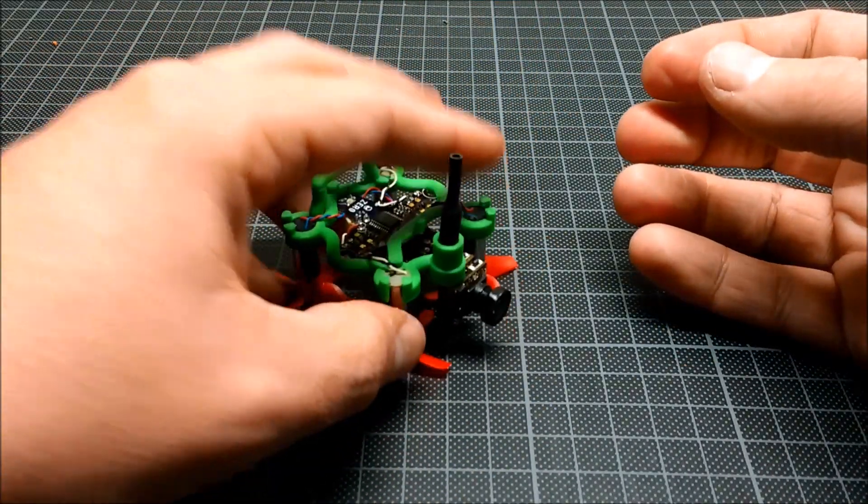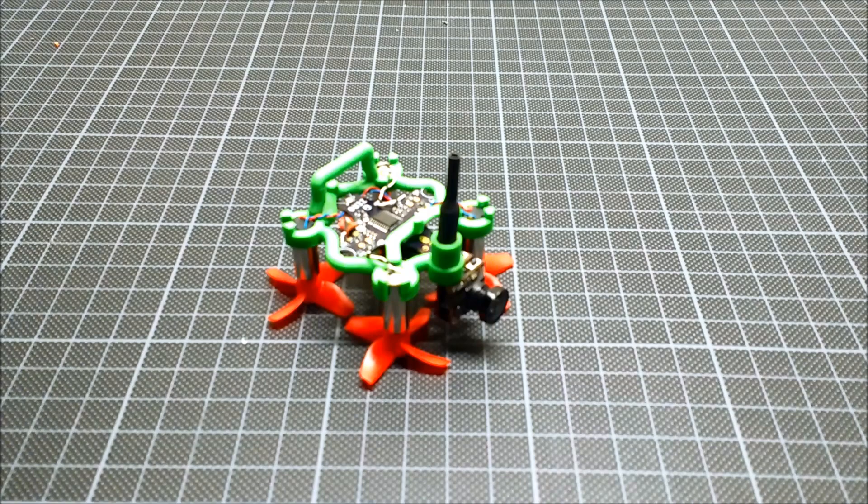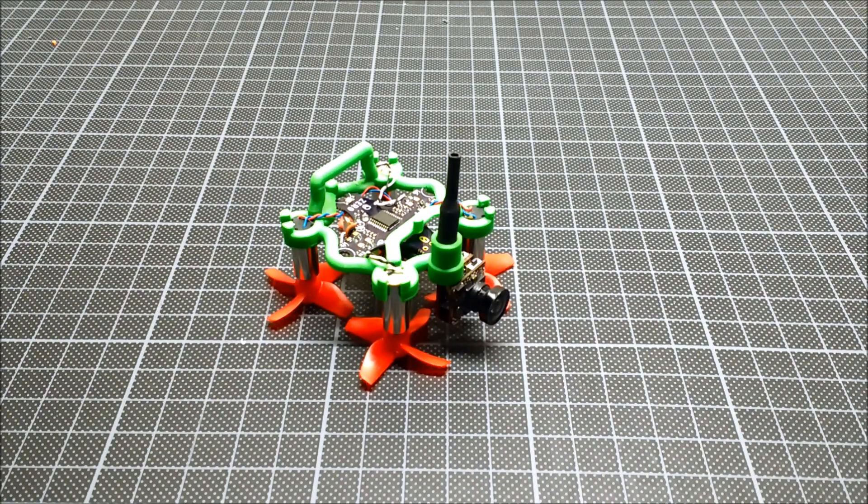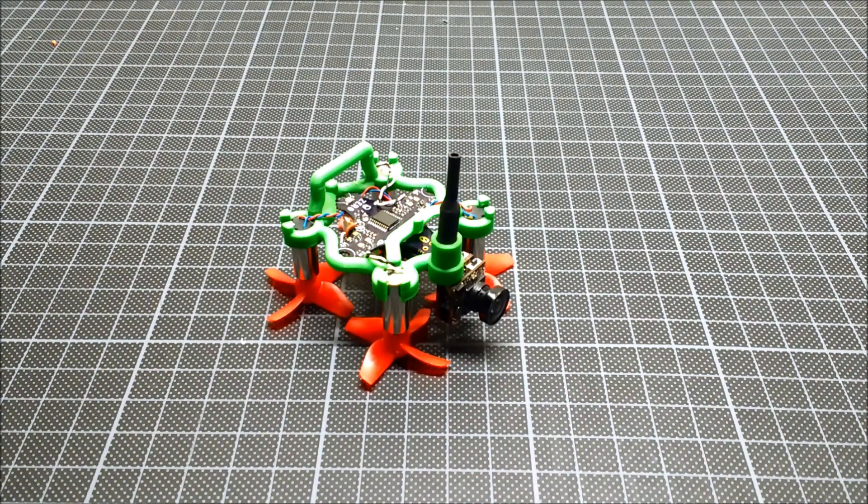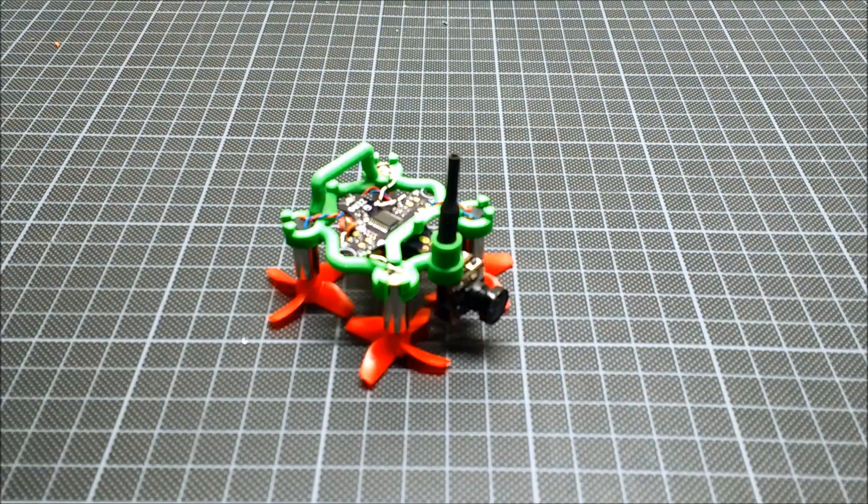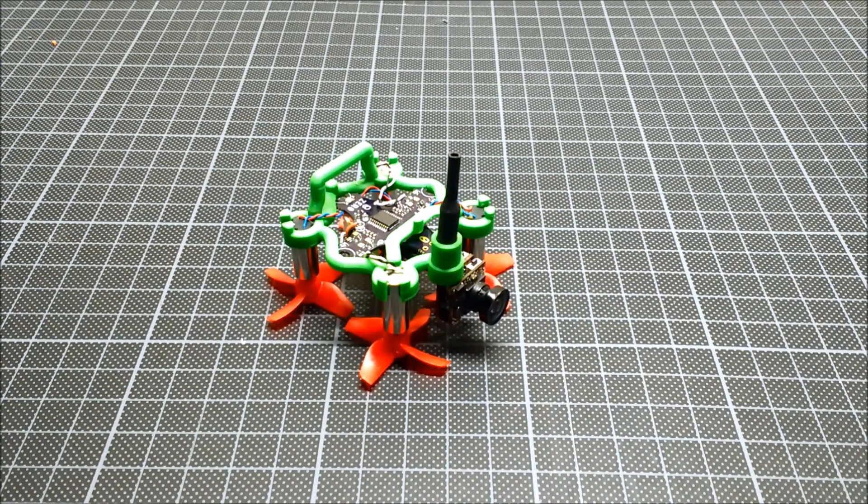For a pusher prop setup like this, you need to mount counterclockwise propellers on clockwise motors and vice versa. Only the motors get switched up, not the propellers. There we go. This can already fly if you wanted to. It's great fun, but if you hit something regularly, you will have the mailman delivering new propellers to you every week.